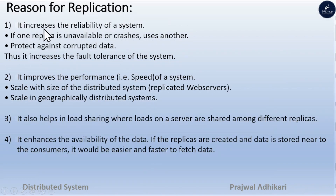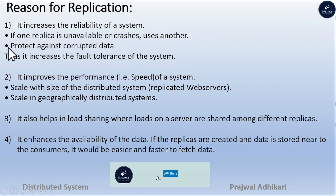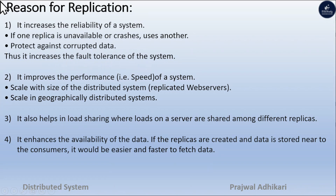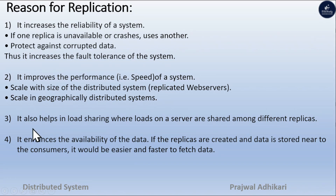Why do we need replication? We need replication because it increases the reliability of the system. If one replica is unavailable or crashes, another replica can be used, protecting against corrupted data, thus increasing the fault tolerance of the system. It also improves performance — speed scales with the size of distributed systems and geographically distributed systems.